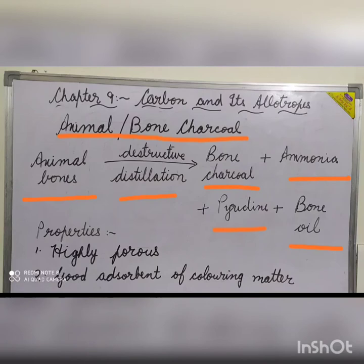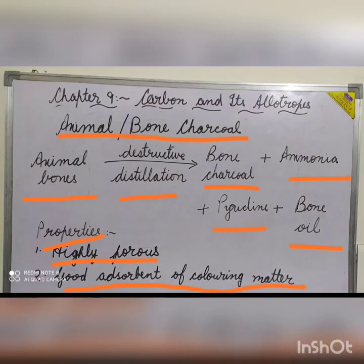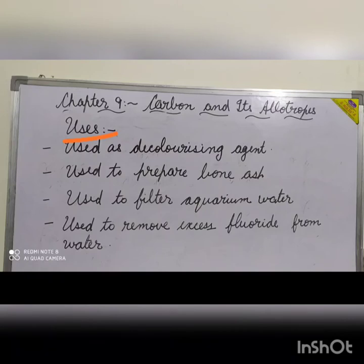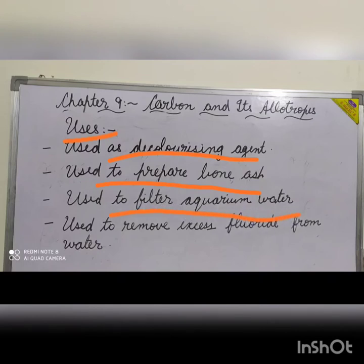Animal charcoal contains only 10% carbon and is mostly made up of calcium phosphate. It is highly porous and a good absorbent of colouring matter. Uses of animal charcoal: it is used as a decolourising agent during the manufacture of white sugar to remove the brown colour from sugar cane juice. It is used to prepare bone ash, which is used in the manufacture of white phosphorus. It is used to filter aquarium water and to remove excess fluoride from water, which can cause tooth decay.